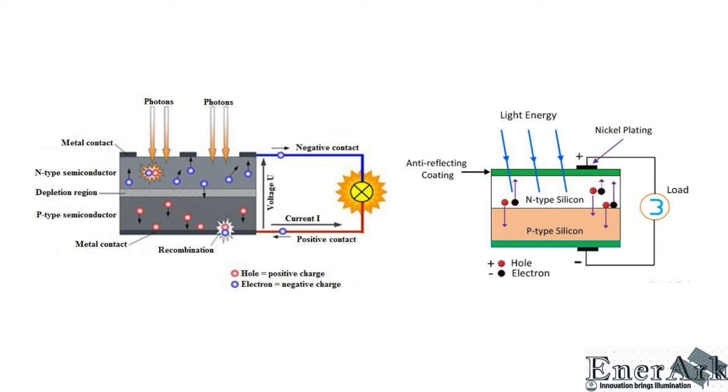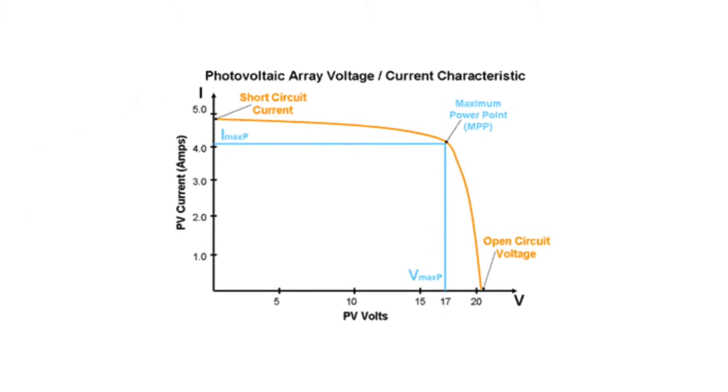Hence, positive and negative charges are created and the solar cell acts as a mini battery. Therefore, it creates a photovoltaic array current versus voltage graph.